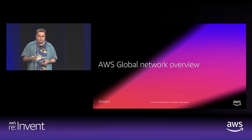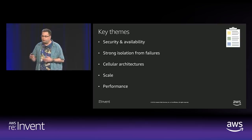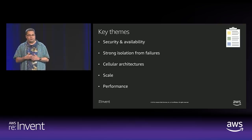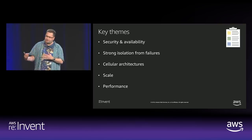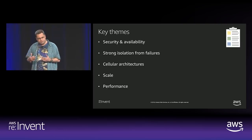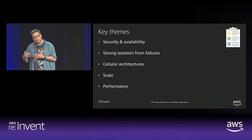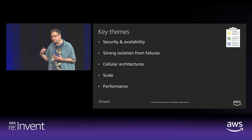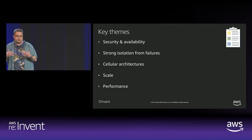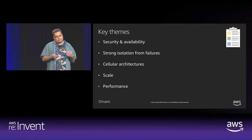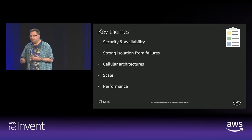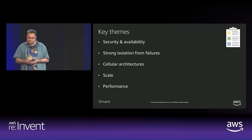Let's start with an overview of the ADOS global network. Key themes include security and availability. From a security perspective, you'll see how we implement security controls at the perimeter of our network. For availability, you'll see how we achieve strong isolation from failures and how we've taken concepts like cellular architectures from the software and service space and translated them into the networking infrastructure side. We'll also talk about scale — continually scaling the network to support customer traffic — and performance, meaning low latency between regions and availability zones, as well as throughput including things like jumbo packets.